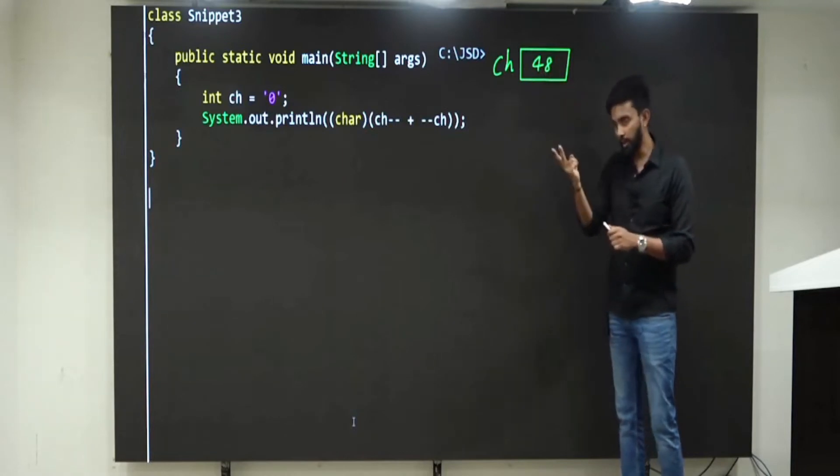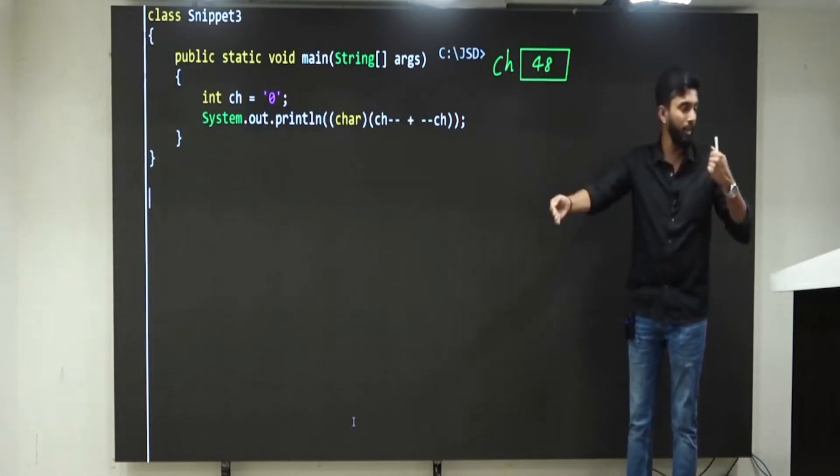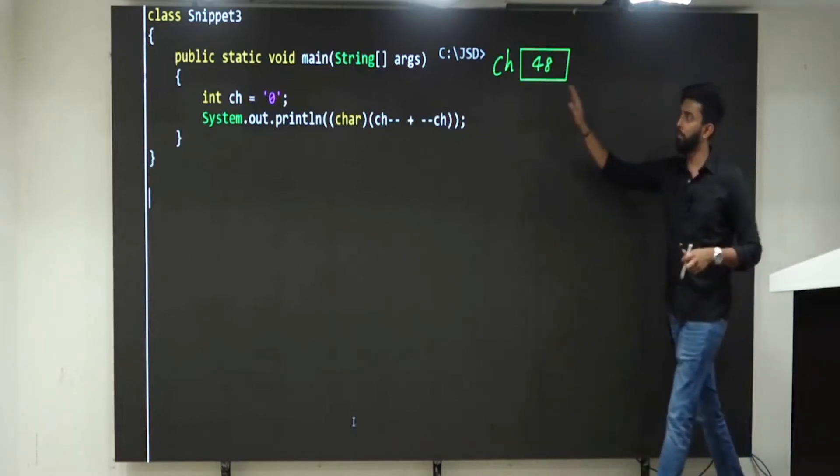48 is 0, 49 is 1, 50 is 2, 51 is 3, like that. 0 to 9. Clear? Now watch it. I am coming to the next slide.